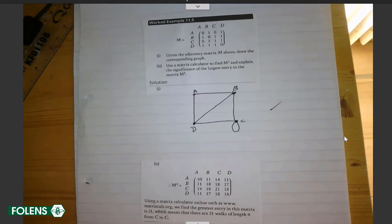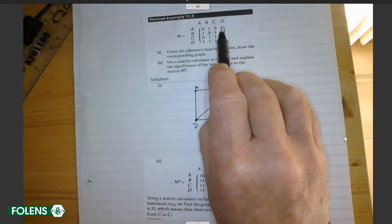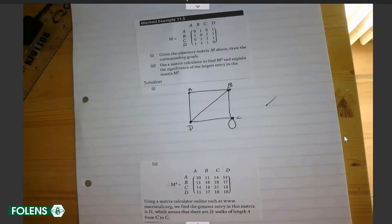Use a matrix calculator. I simply put these entries, 0, 1, 0, 1, and so on, onto a matrix calculator. Pressed M to the power of 4, it does it all very quickly. Matrixcalc.org is, I think, the most nifty little one. It does it beautifully and very clearly and lays it out.